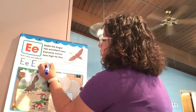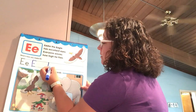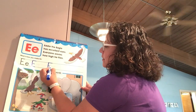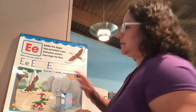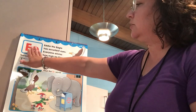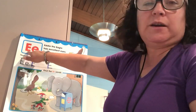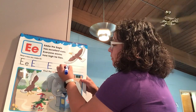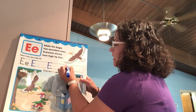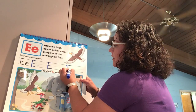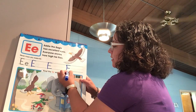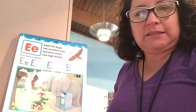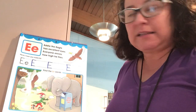Let's do a couple more. Start at the top, long line, then a short line at the top, then middle, and then at the end. It's very similar to F, except we have one more line at the end. Let's make one more uppercase E: straight line down, short line, one in the middle, and then one at the end. Remember, whenever we're practicing writing, we can make mistakes — that's how we learn.